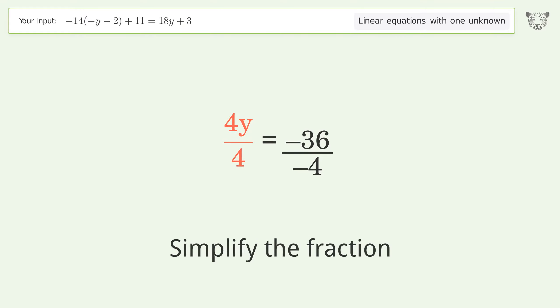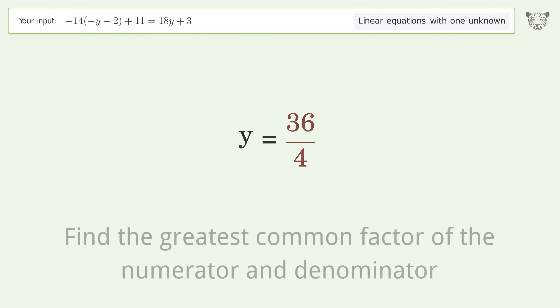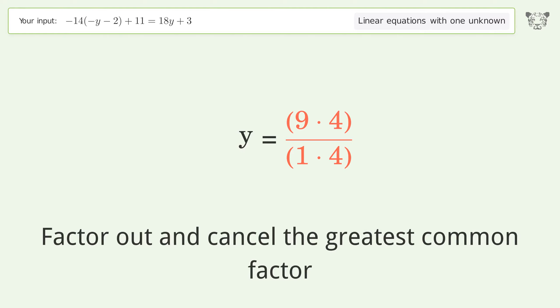Simplify the fraction. Cancel out the negatives. Find the greatest common factor of the numerator and denominator, then factor out and cancel the greatest common factor.